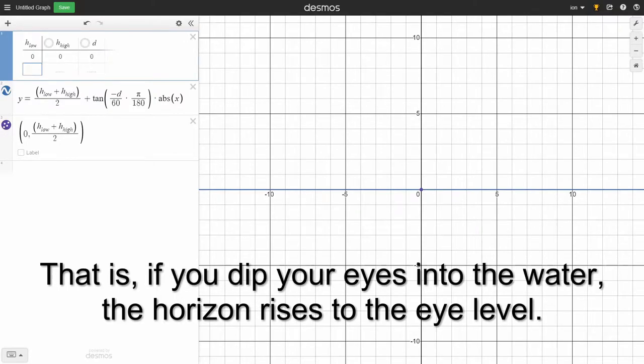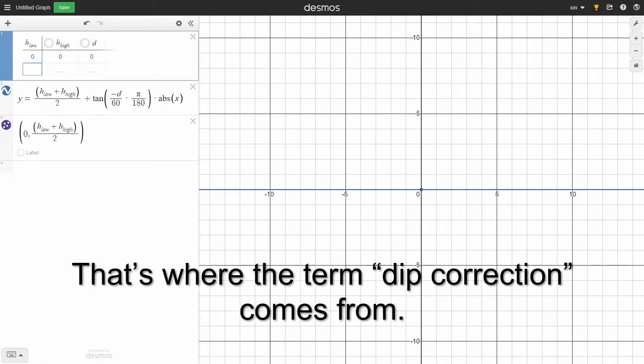That is, if you dip your eyes into the water, the horizon rises to the eye level. That's where the term dip correction comes from.